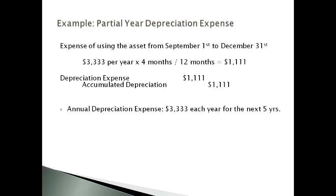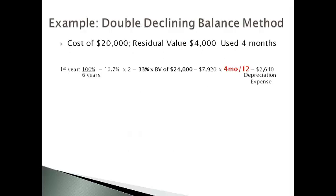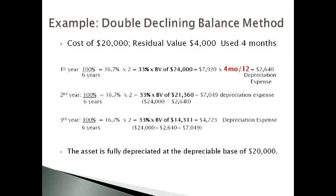Each year after that will report a full year of depreciation expense until the last year the asset is used, when 8 months of depreciation expense will be recorded. The total accumulated depreciation expense over the full 8 years of use will be $20,000 — the depreciable base. The same approach is used with the double declining balance method or any other method for assets purchased during the year: compute a full year of depreciation and multiply the annual expense by the number of months over 12 the asset was used. The depreciation expense is subtracted from the historical cost to get book value, which is then multiplied by the percent to get the next year's depreciation expense, continuing until total depreciation reaches the depreciable base of $20,000.